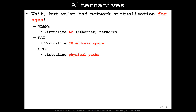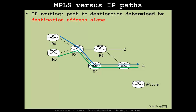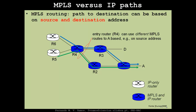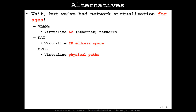MPLS allows you to virtualize physical paths. IP routing determines a path to a destination based on the destination address alone, so routers R6 and R5 sending packets towards A must follow the same route. With MPLS, you have more flexibility — you can use both source and destination addresses for routing decisions, making packets from R6 use a different path than those from R5. But MPLS only virtualizes physical paths, nothing else. These three primitives could be used together to offer global full network virtualization, but still wouldn't be enough.